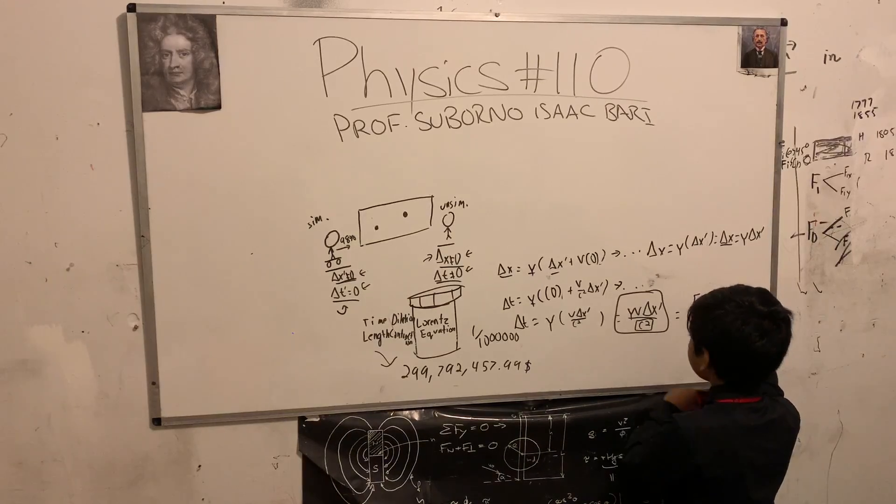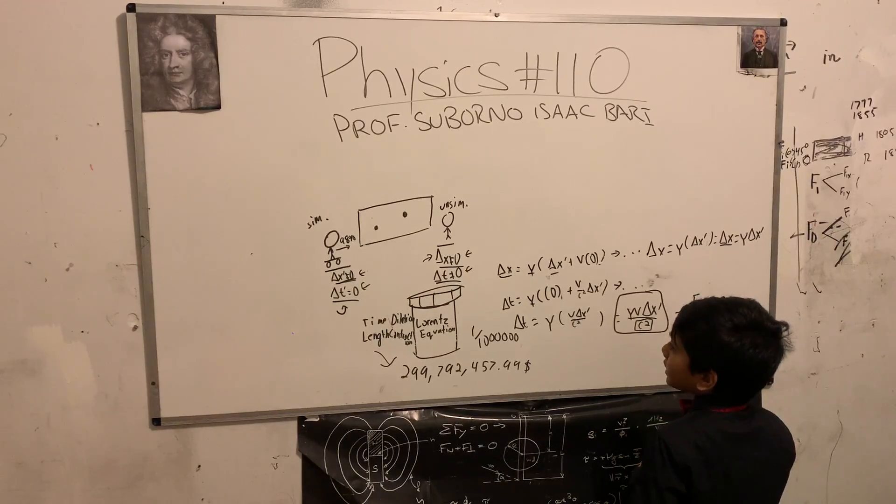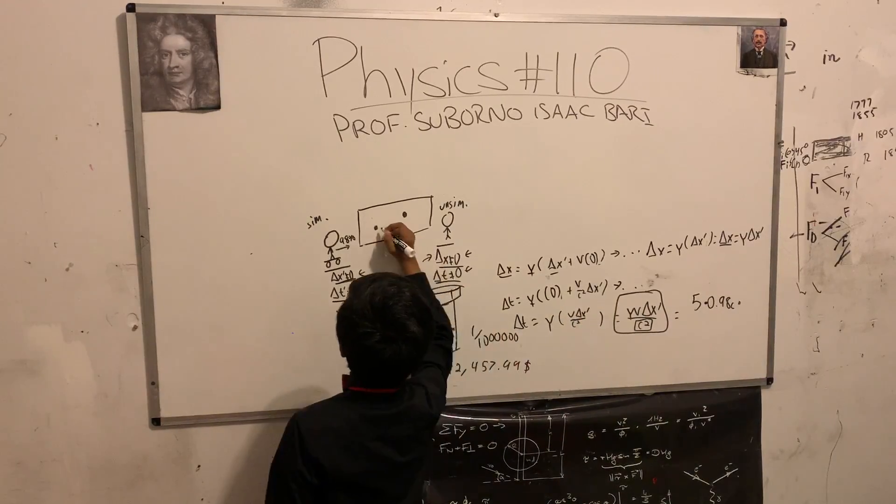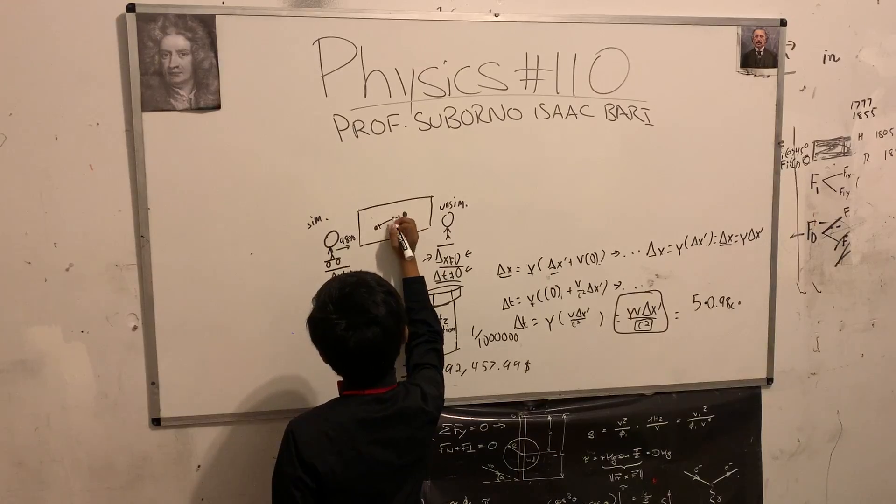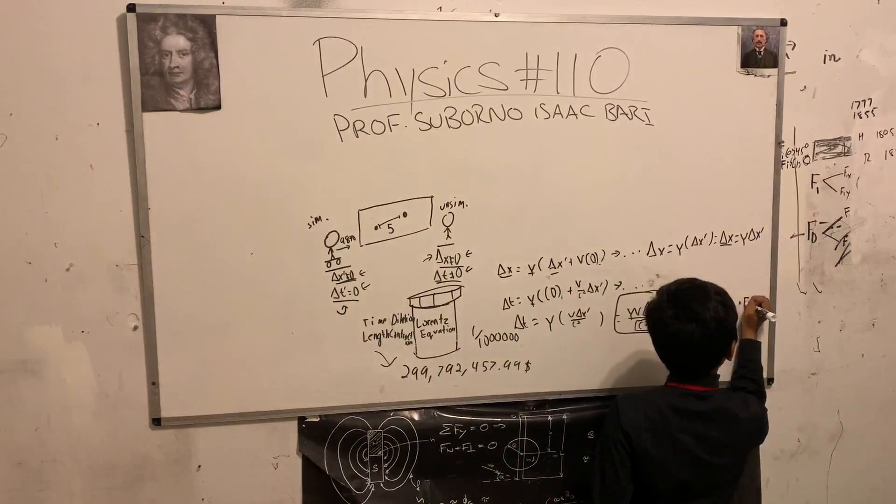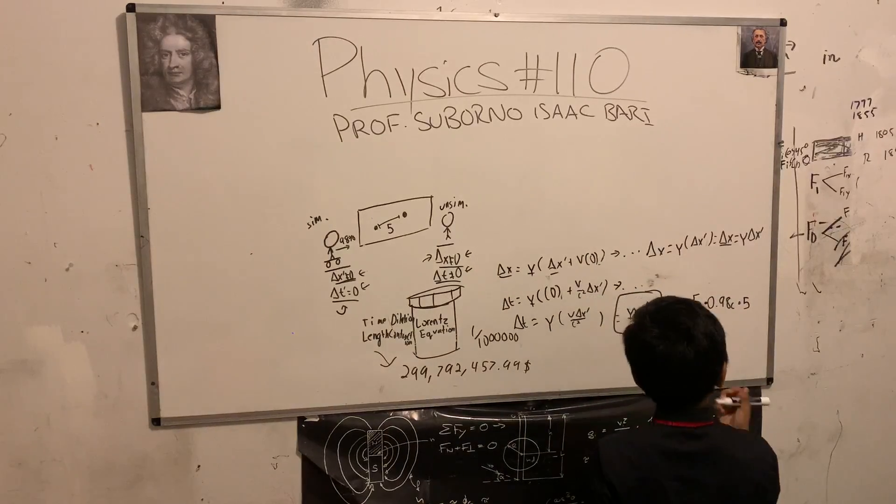So yeah, 5. So that gives us about 5, and then we have a multiplication of 0.98 c times delta x prime. Delta x prime we can just set to some arbitrary value like, hey, you know what, I don't care, so I'm just gonna set it to 5.